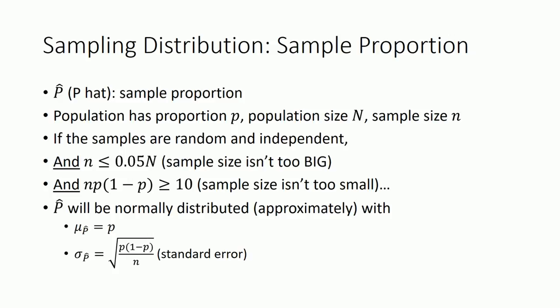So if you are sampling from a population with proportion little p, population size capital N, and sample size little n, as long as three requirements are satisfied, we will have a sampling distribution for p hat. So the three requirements are, first, your sampling must be done randomly and independently, essentially meaning that the individuals in your sample are just randomly picked, and the answers that one individual gives are not affected by the answers that the other individuals give.